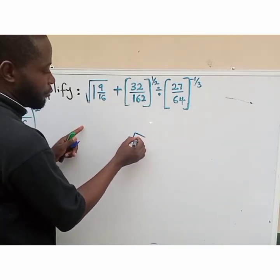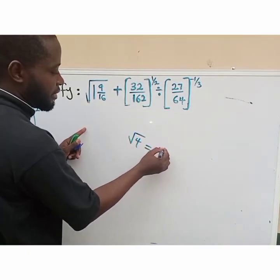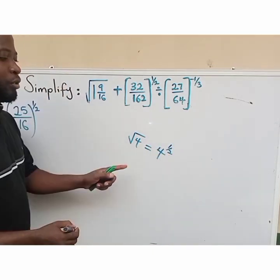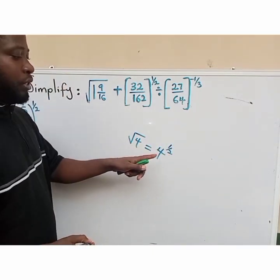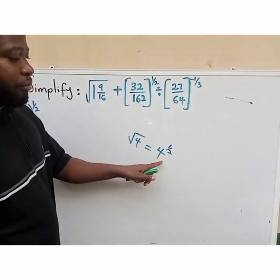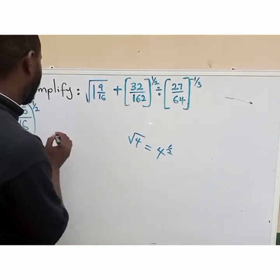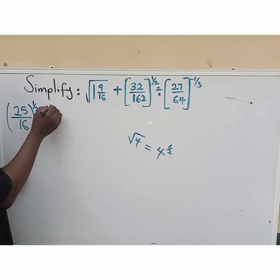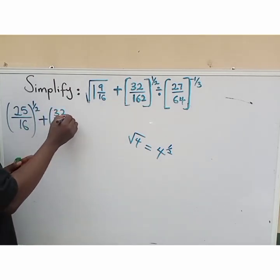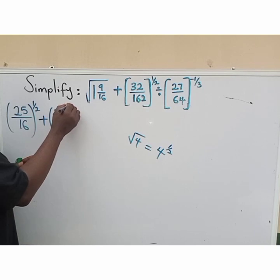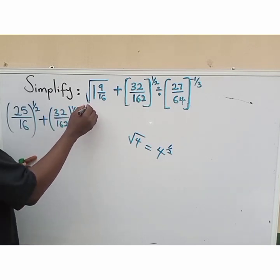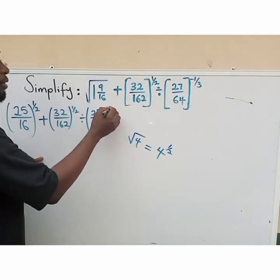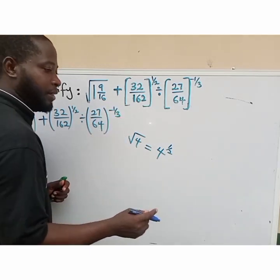Don't forget: when we have the square root of 4, it's the same thing as saying 4 raised to the power of 1 all over 2. So if you have to change root of 4 to index form, you get 4 raised to power 1 over 2. So we are going to have plus (32 all over 162) raised to the power of 1 all over 2, divided by (27 all over 64) raised to the power of minus 1 all over 3.